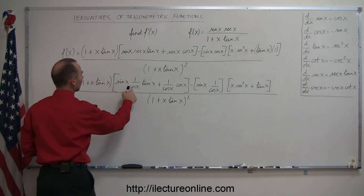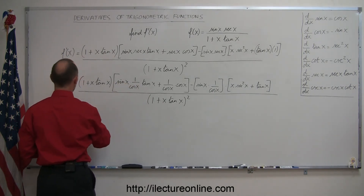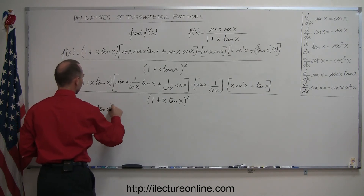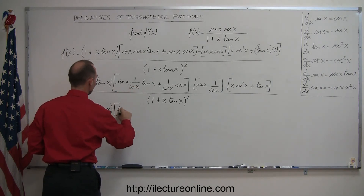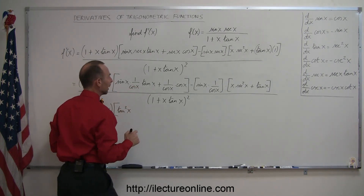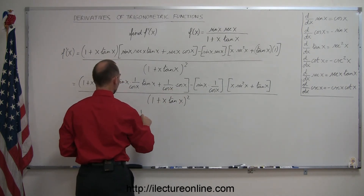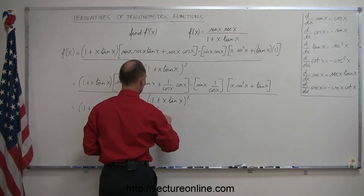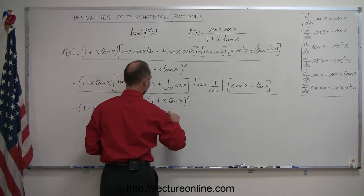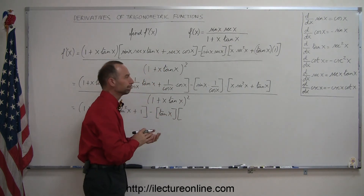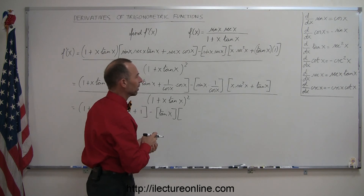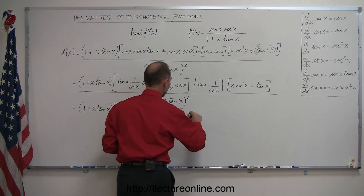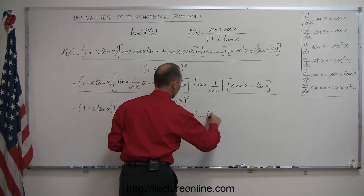So sine of x over cosine of x is tangent, times tangent, which is tangent squared. This is equal to 1 plus x times tangent of x, times tangent squared of x. Cosine divided by cosine is 1. Minus sine over cosine, which is tangent of x. So there are different options, plus the tangent of x.